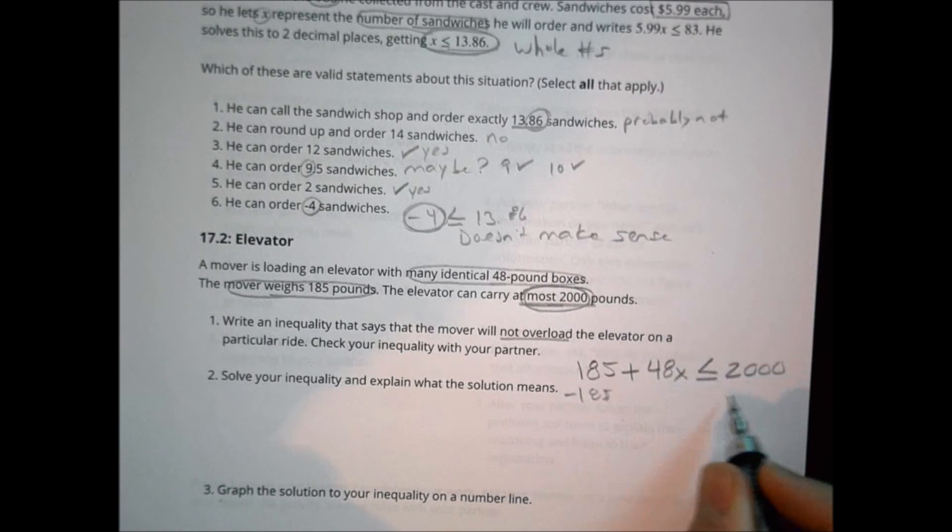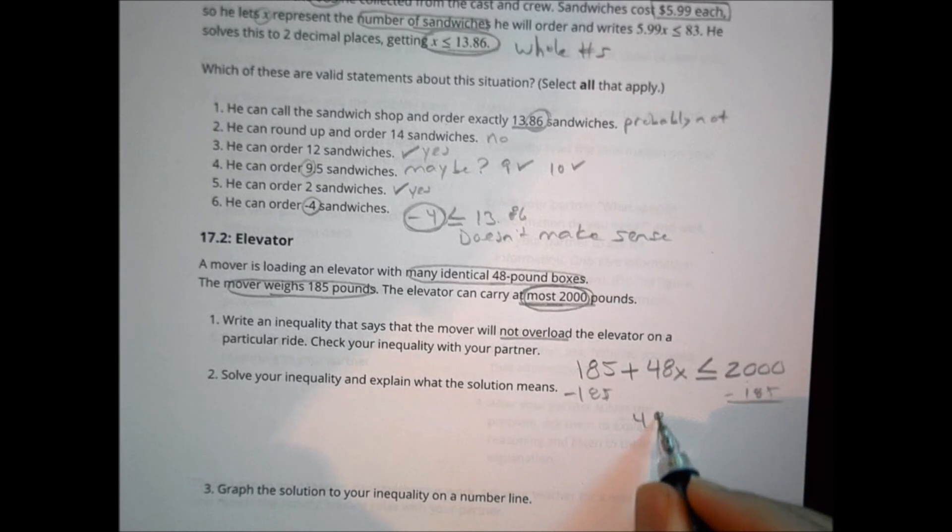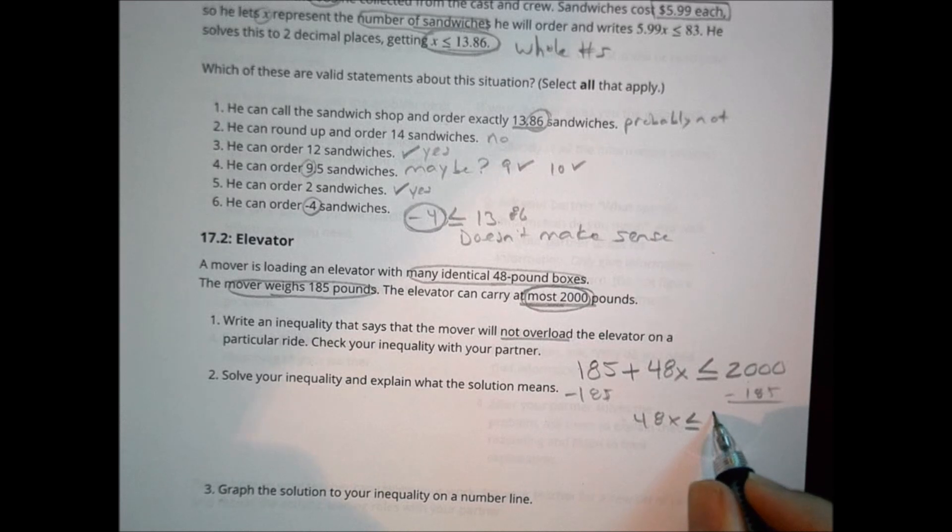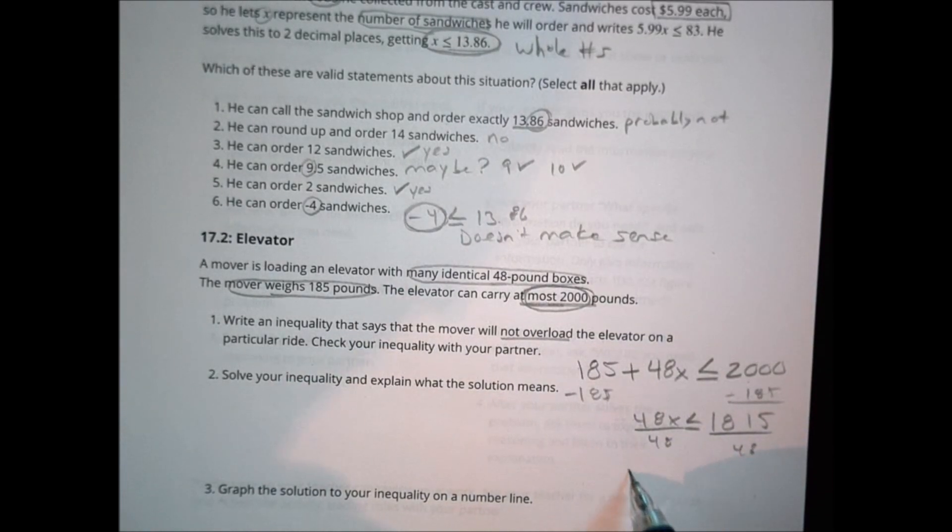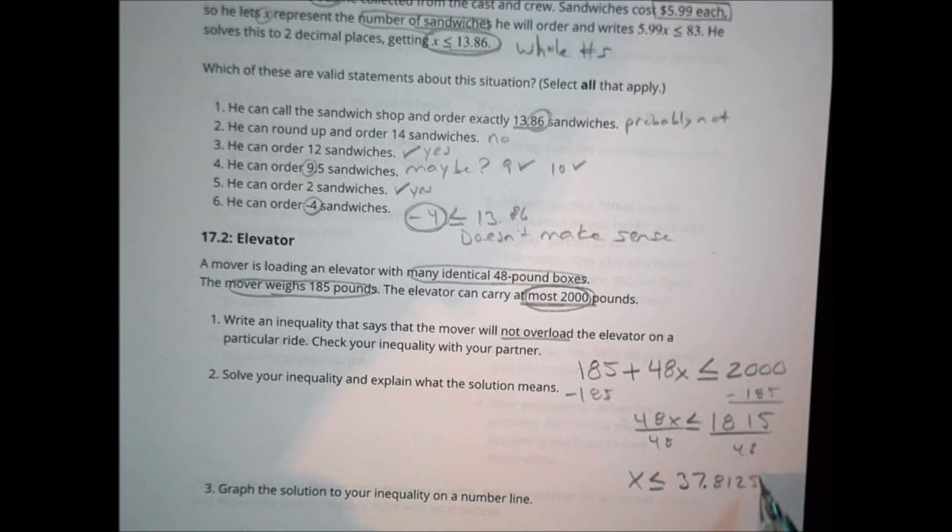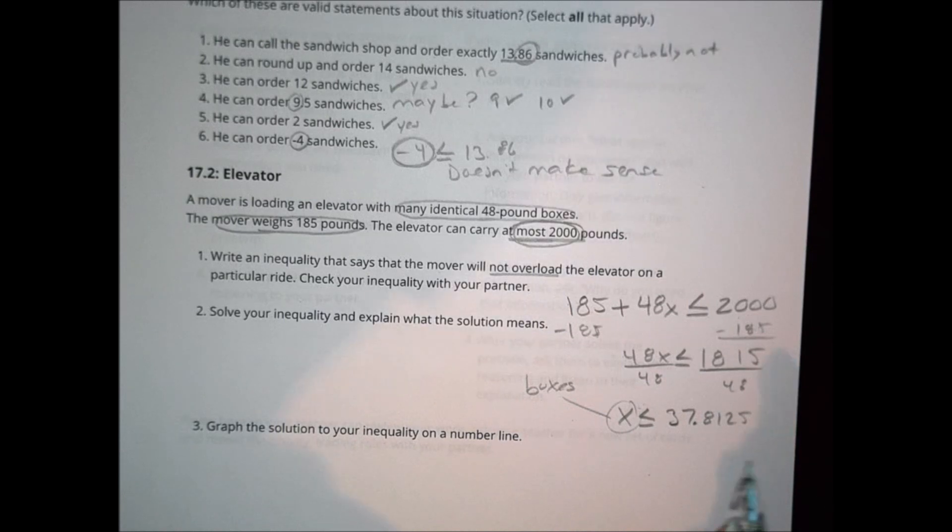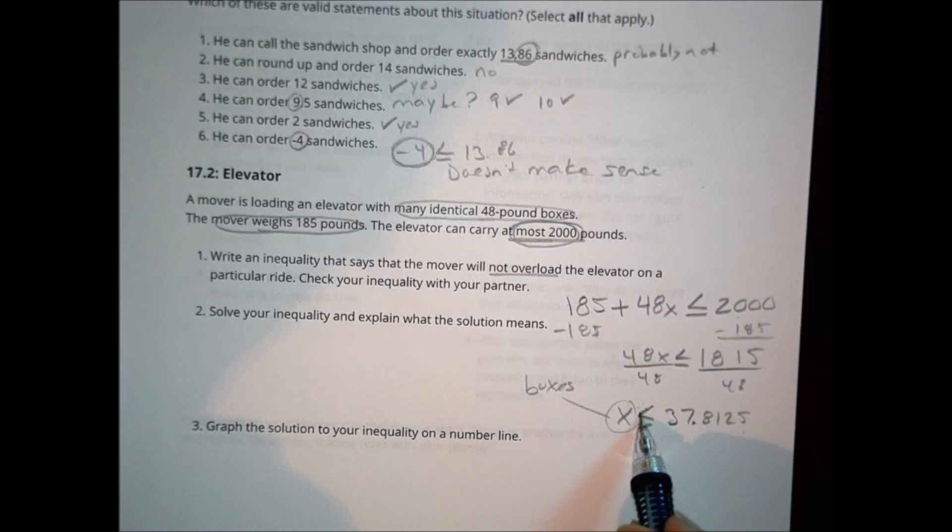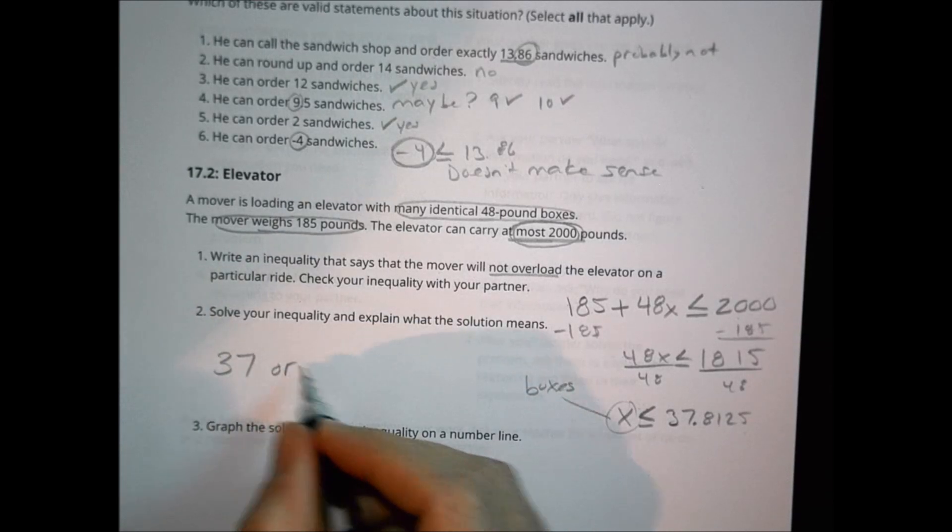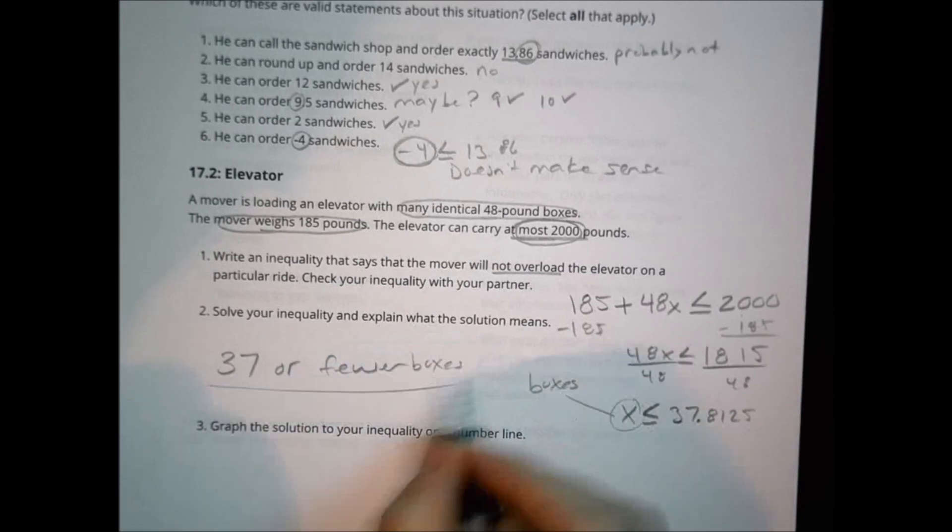To solve this, we subtract 185 from both sides. We end up with 48x is less than or equal to 1,815. We divide both sides by 48 and x is less than or equal to 37.8125. Now again, x represents the number of boxes. Is he going to take in 0.8 of a box? Probably not. He's going to take in a whole box most likely. So our solution means he can't take in any more than 37.8 boxes. He can take in 37 or fewer boxes into the elevator.